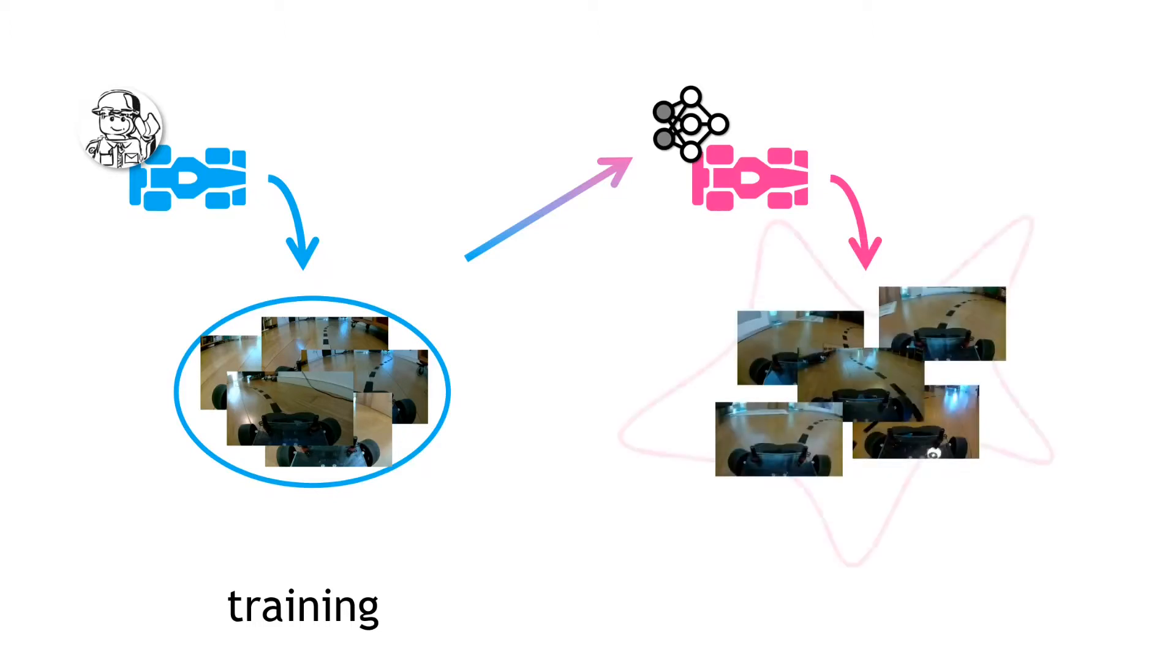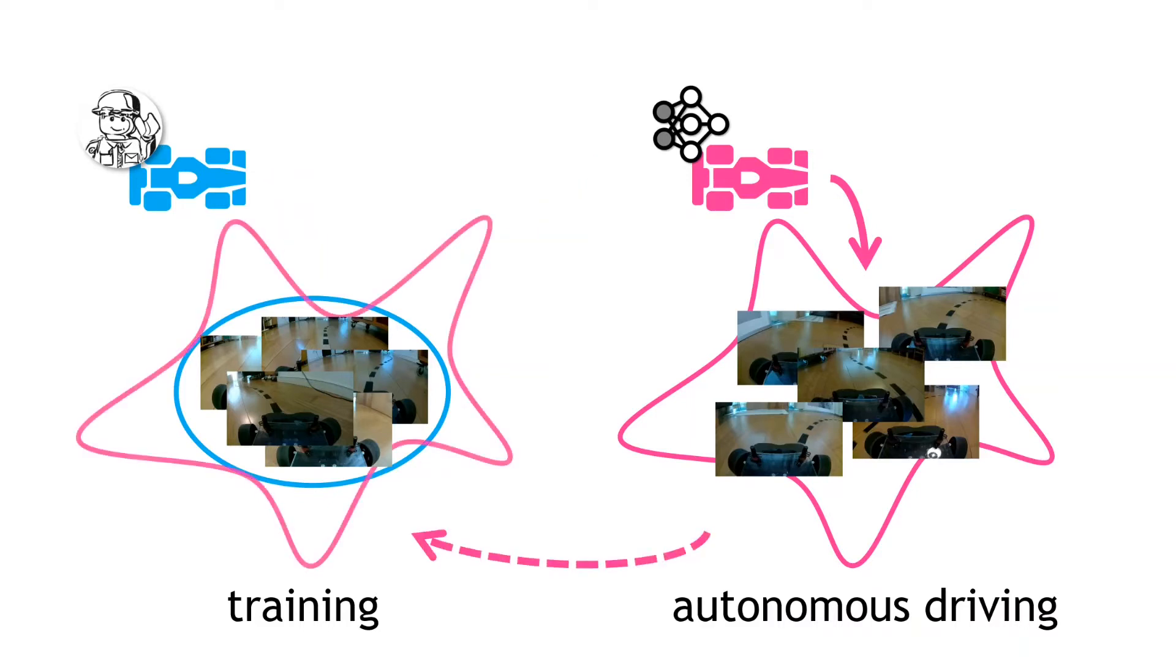To start off with DAGAR, we need an initial set of training data. This is typically obtained from, say, an expert driver. The data is used to train an initial policy model, which we can upload to the vehicle and then go for an autonomous drive. The idea is to use this data from the autonomous drive to expand the training dataset.